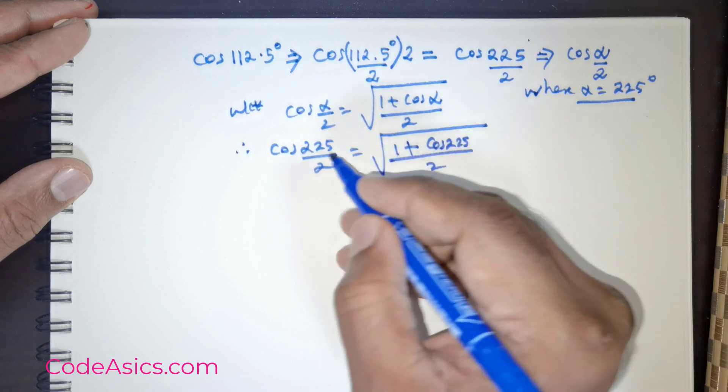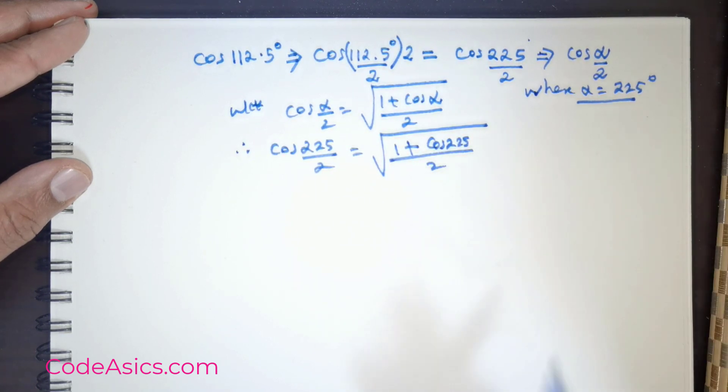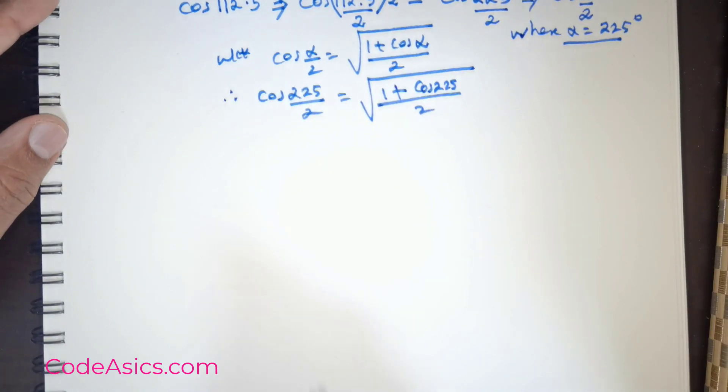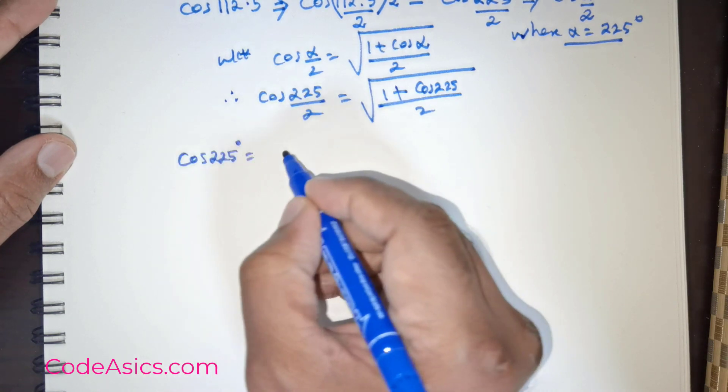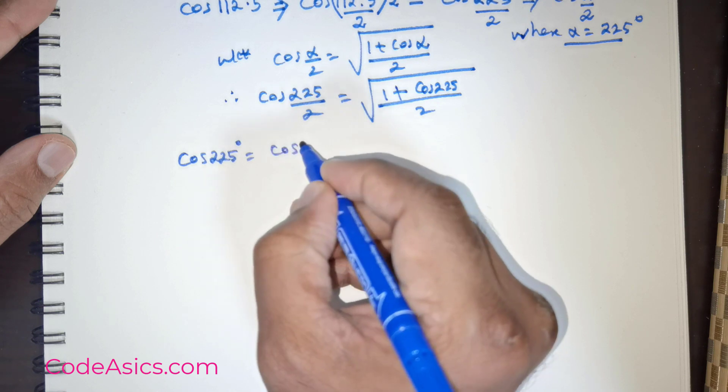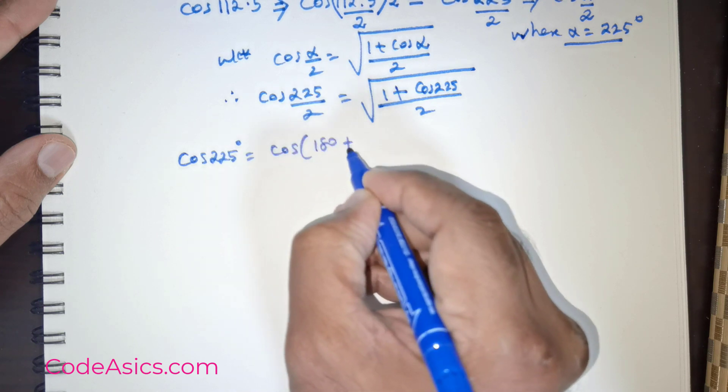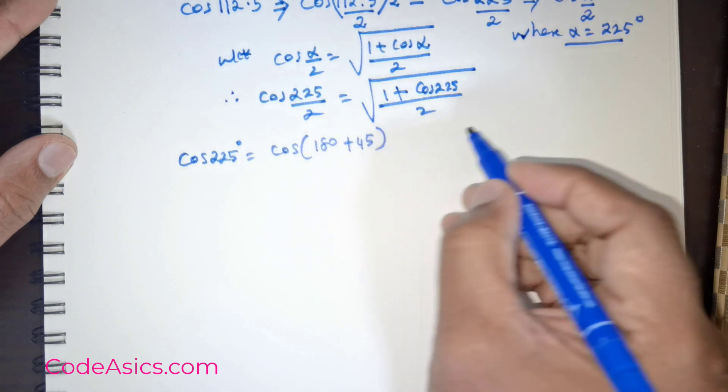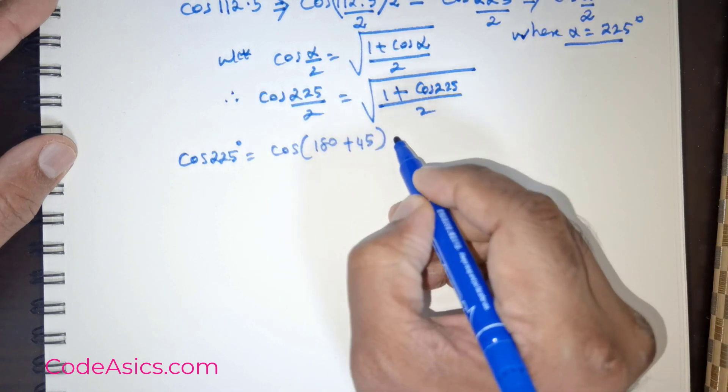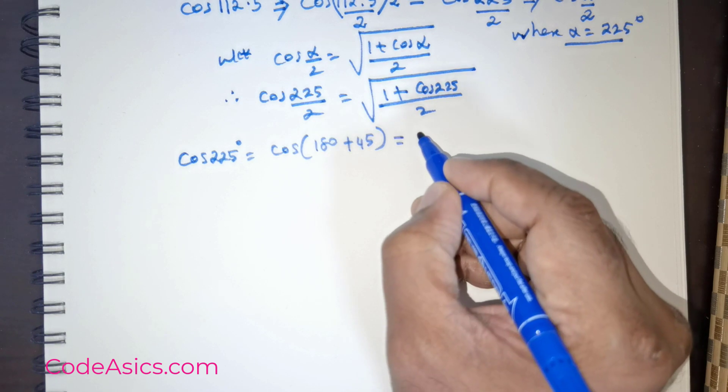If we know the value of cos 225 degrees, this question is completed. So how are we going to get the value of cos 225 degrees? 225 can be written as cos of 180 plus 45, right? This is similar to cos of A plus B.